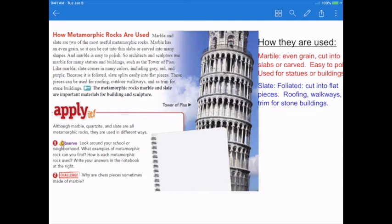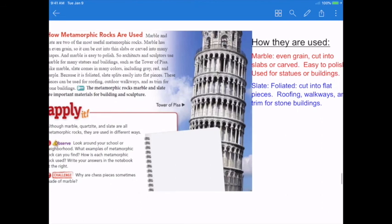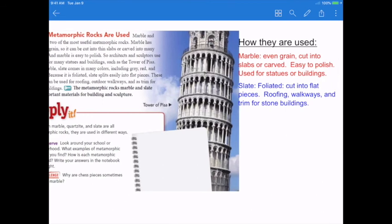Marble is even green. It can be cut into slabs or carved. It's easy to polish. It's used for statues and buildings. So you can see the Tower of Pisa there, Leaning Tower of Pisa. That was created using marble. Slate is foliated. It can be cut into flat pieces. It's really good for roofing, like I told you, walkways, trim, and for stone buildings.